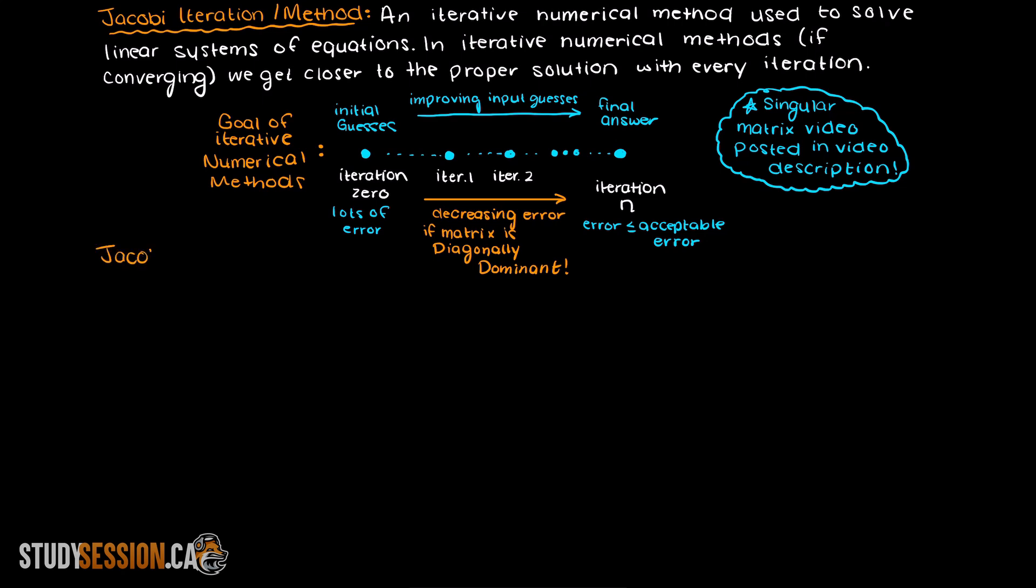So, the steps to solving a linear system of equations using Jacobi iteration are the following.